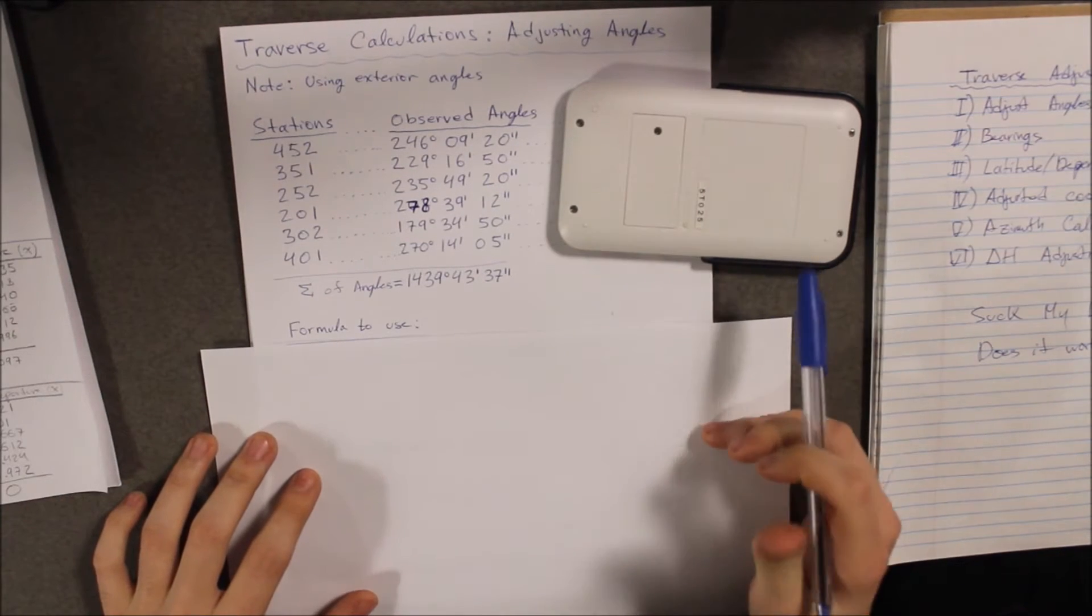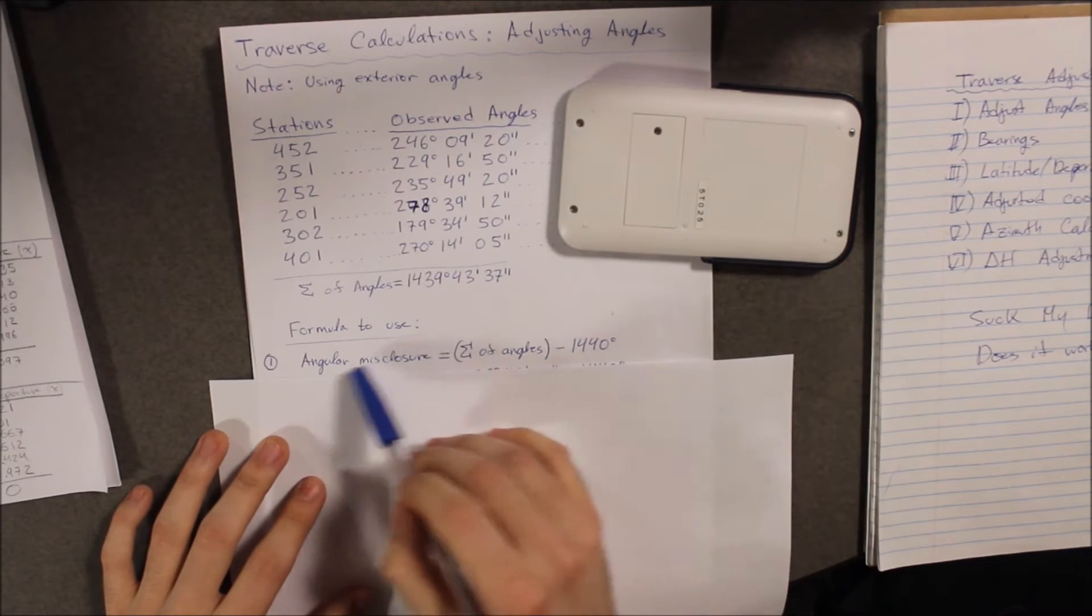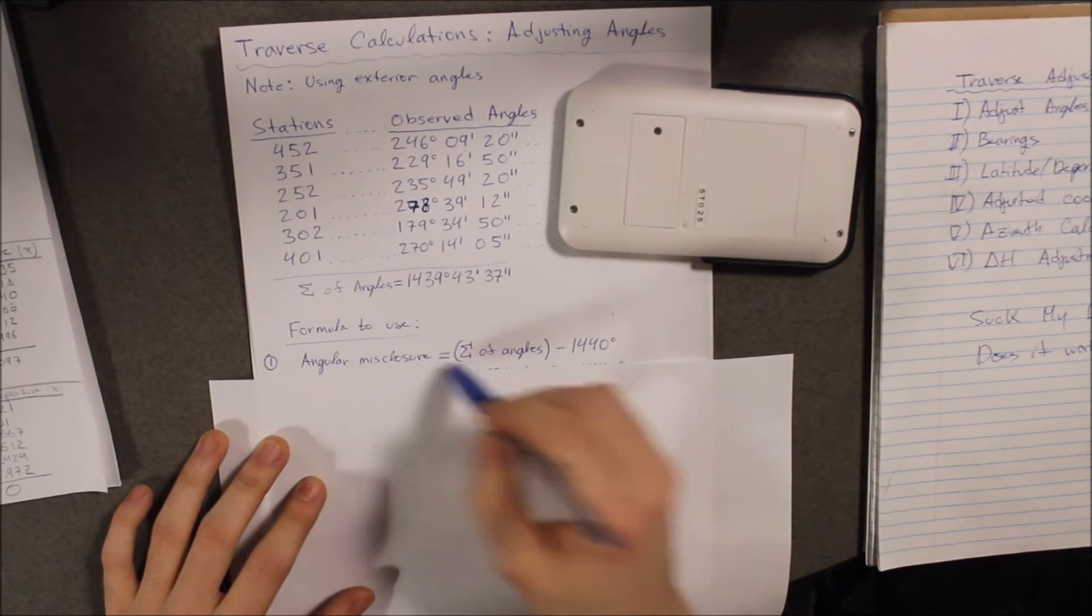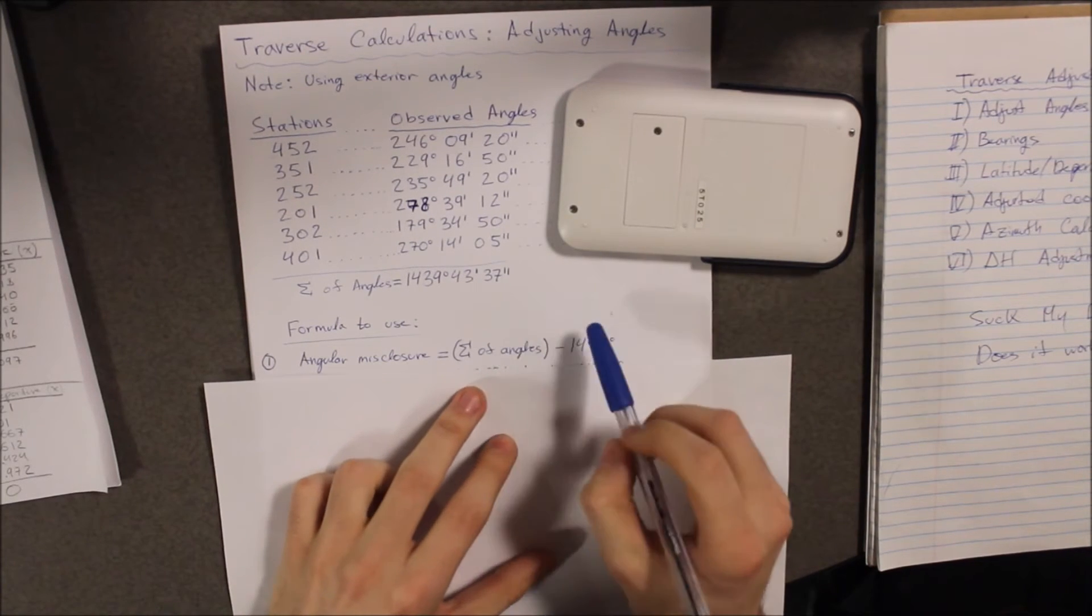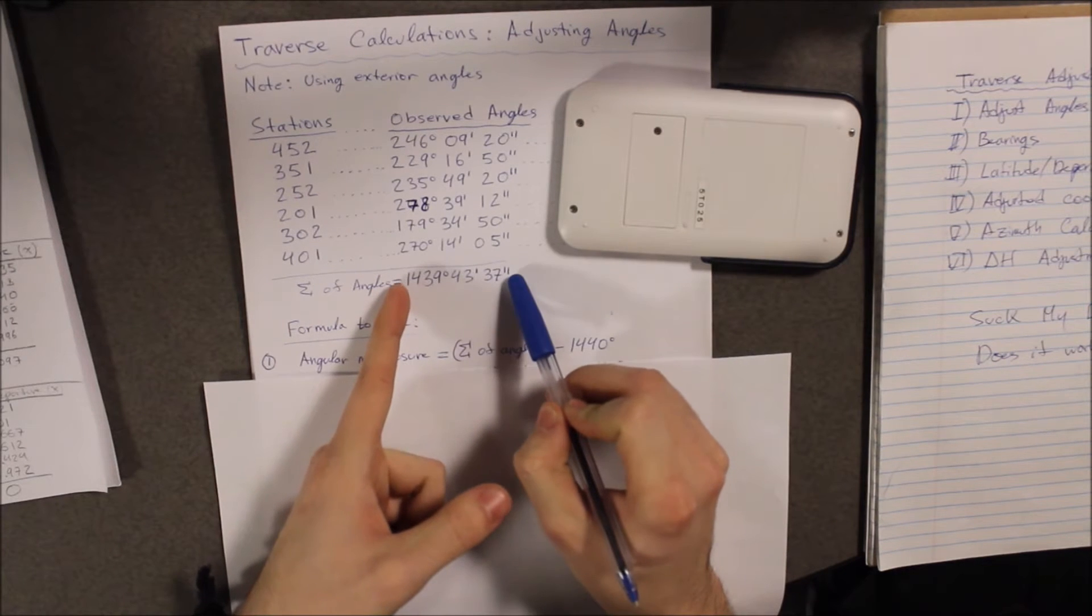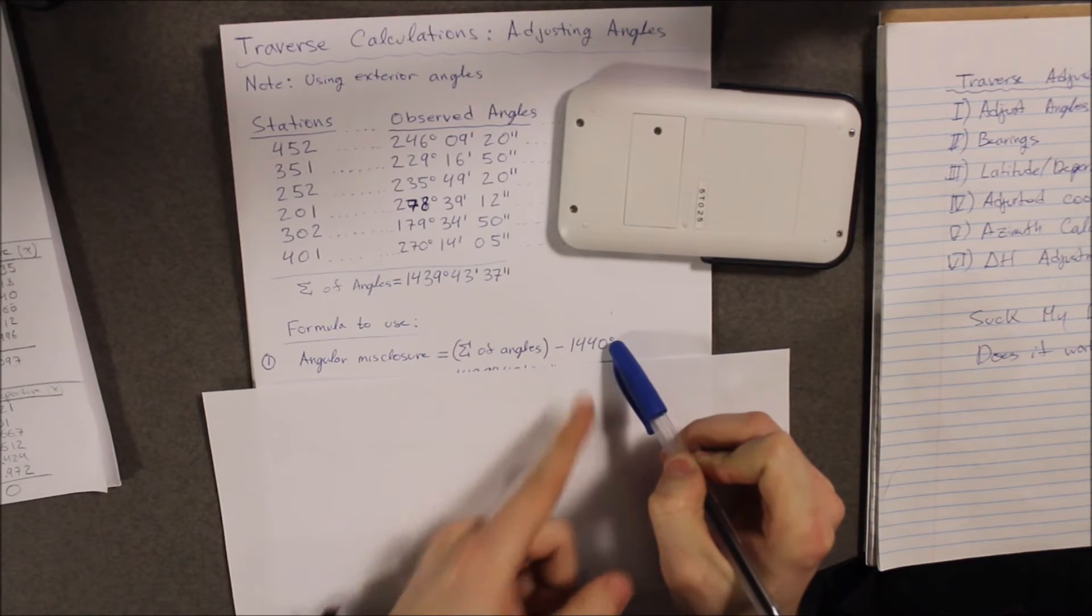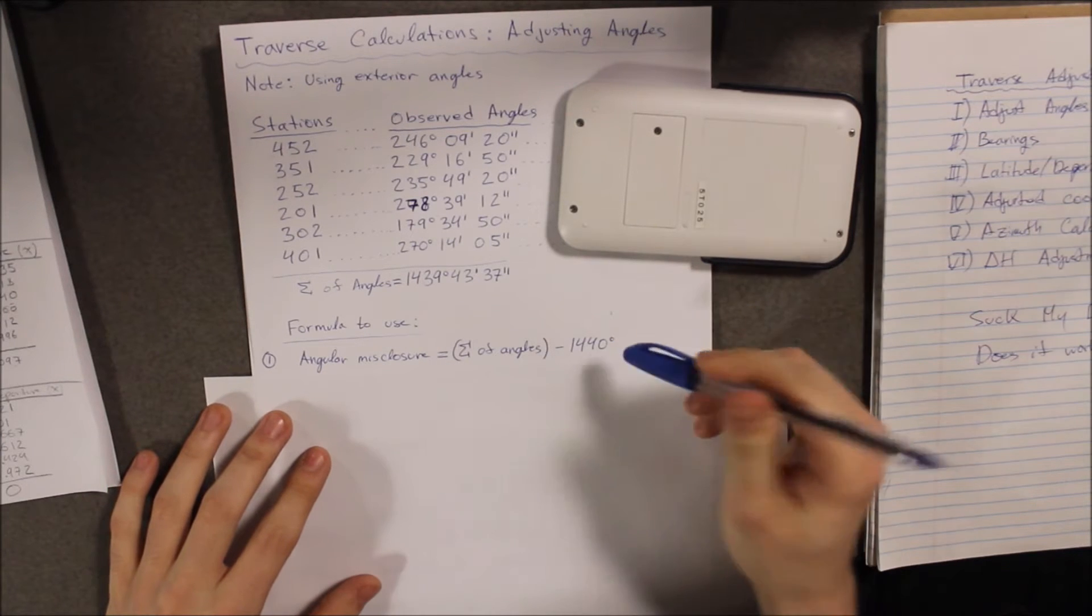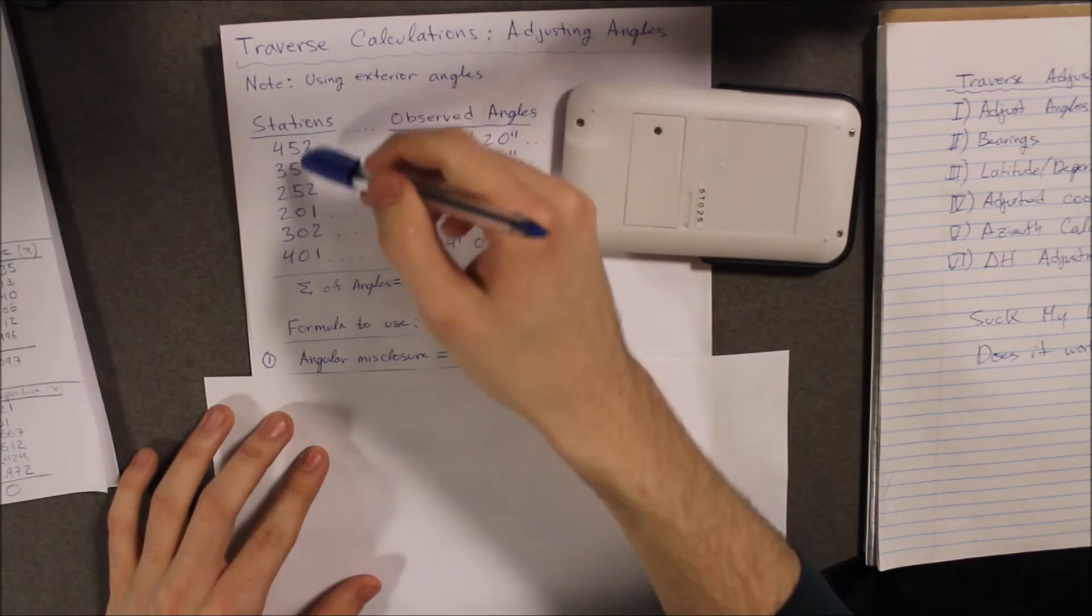Next, I'm going to use the formula. Now, the first formula I am going to use is the angular misclosure formula. Misclosure means error. How I do this is I'm going to take the sum of the angles that I got and subtract the theoretical result. Now, in my case, the theoretical result is 1,440 because we have six sides.